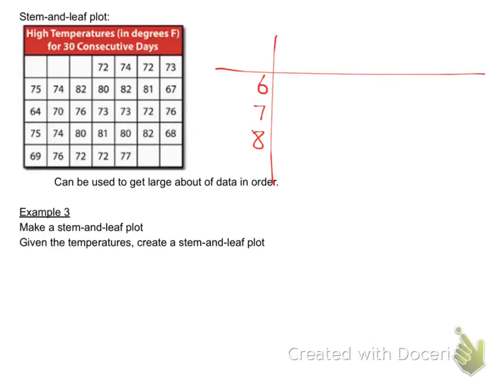Now, what I'm going to do is I'm going to start in the beginning of that list and I'm going to start putting the leaves in their appropriate row. So, the first number is a 72. So, I'm going to put a 2 in the 7 column, or row. Go to the next one. It's a 4. Then I go to a 2 again. Then I go to a 3. These are all 70s. 75. And then it goes 74. Now we're at 82. That means it's an 8, 2. 80. Put a 0. 82.